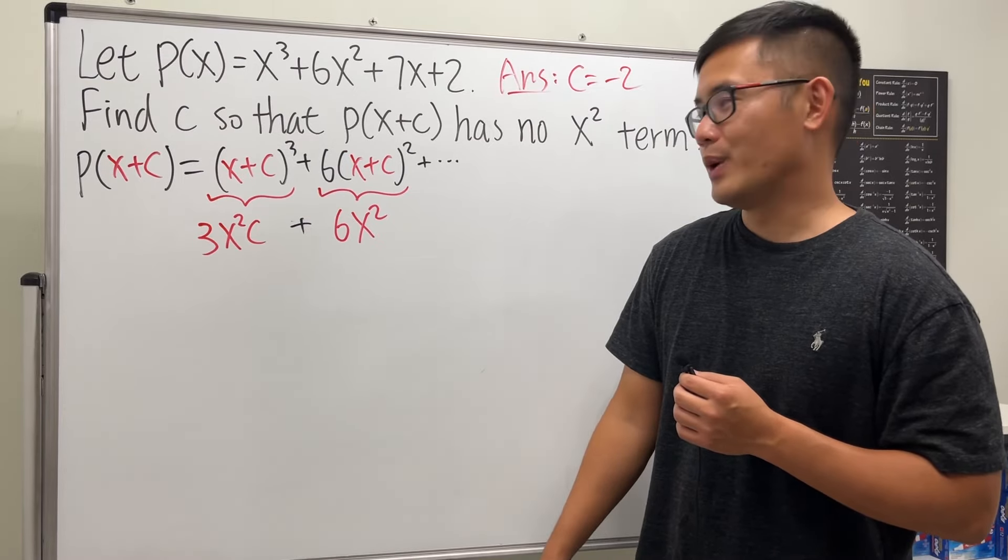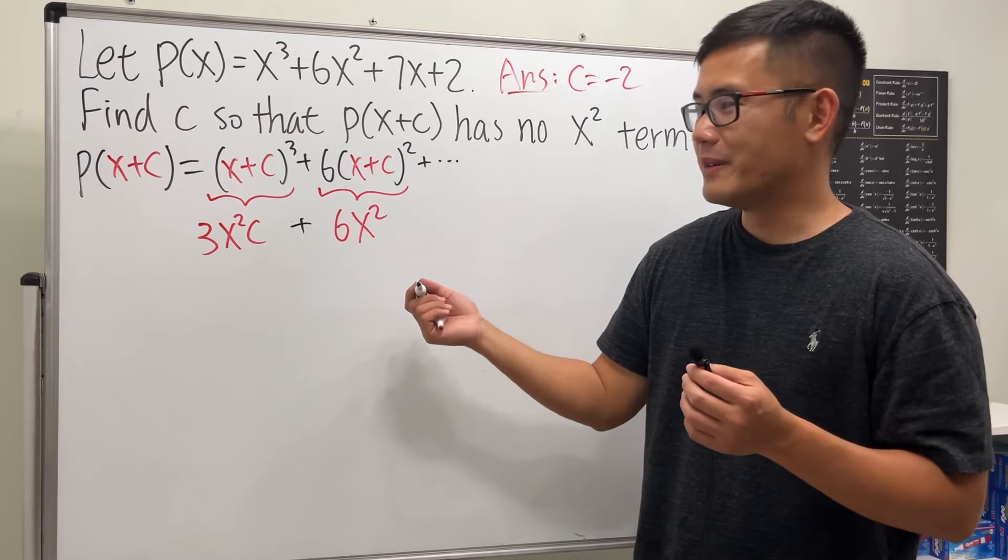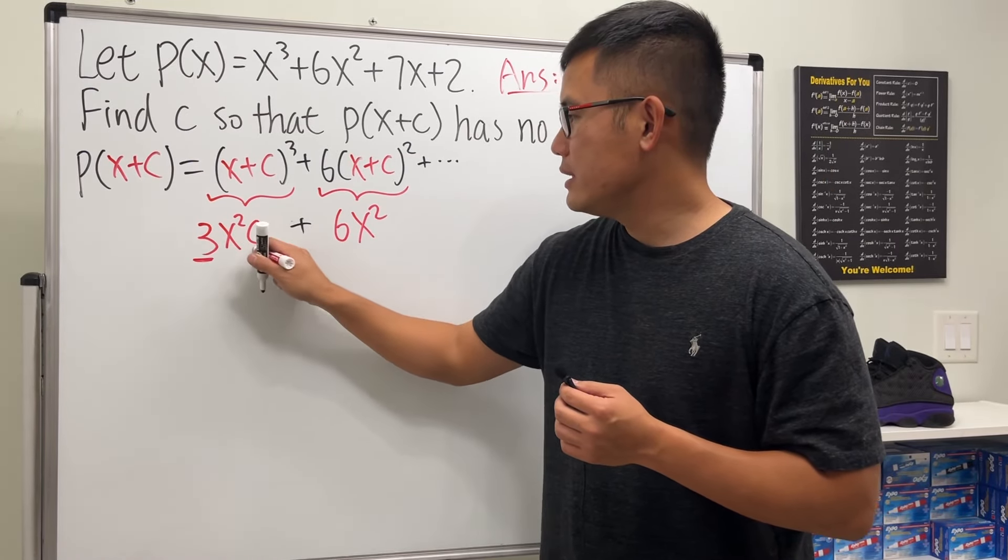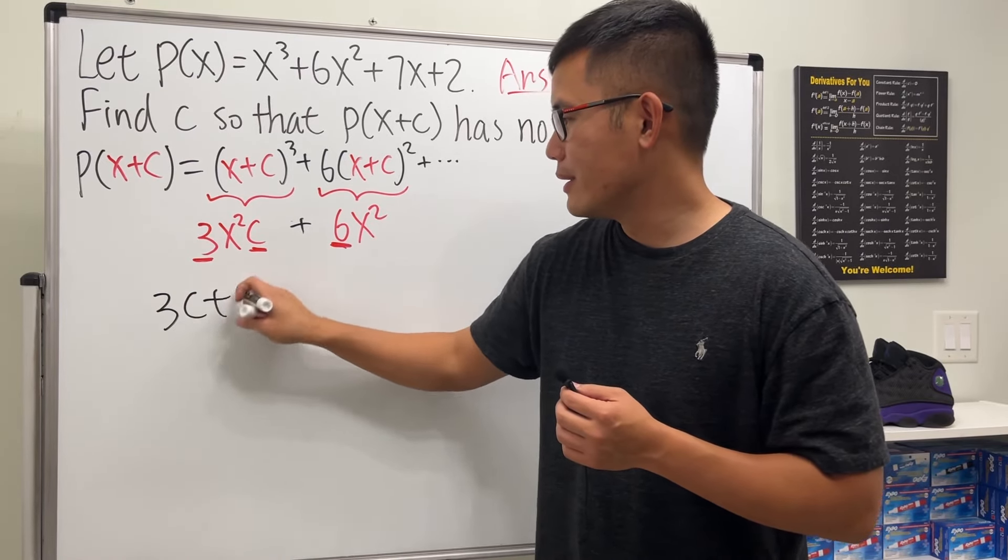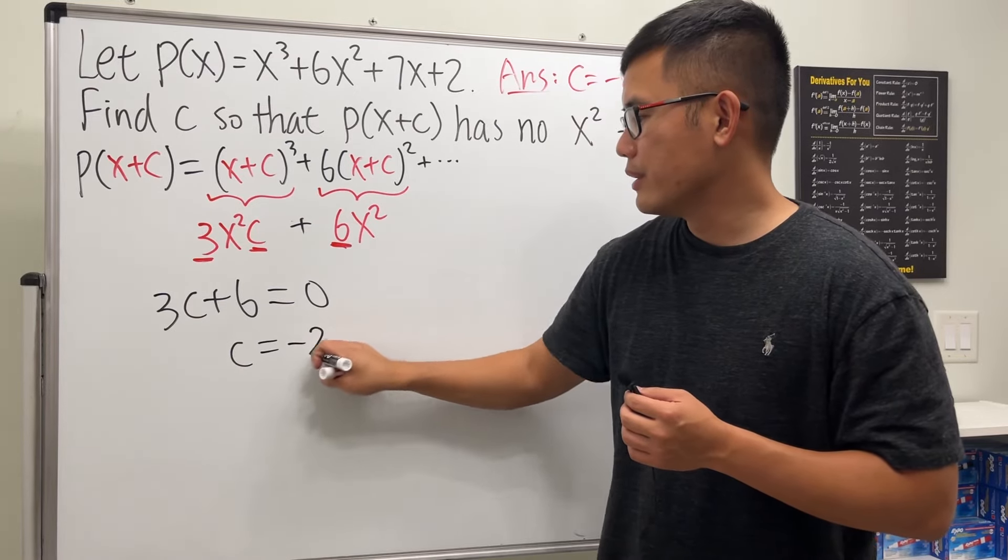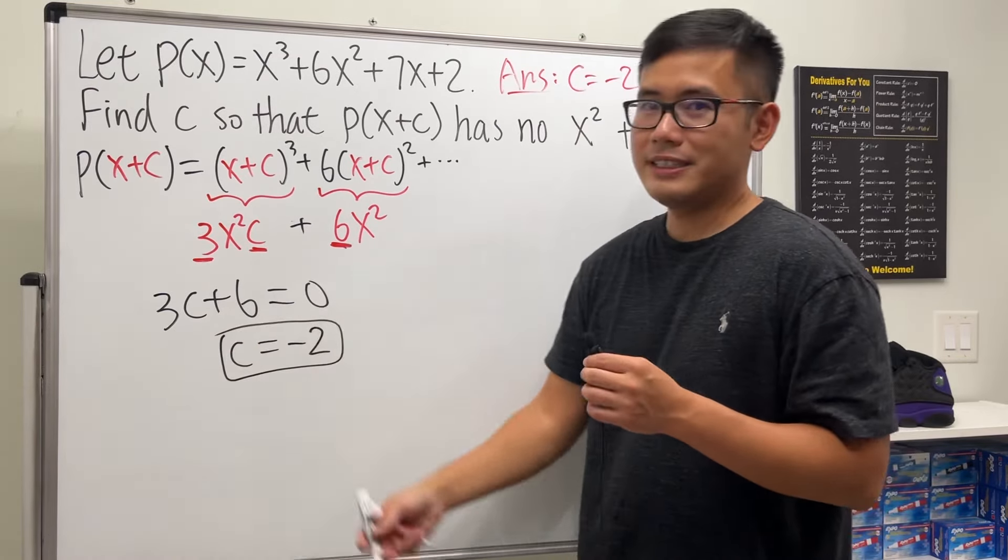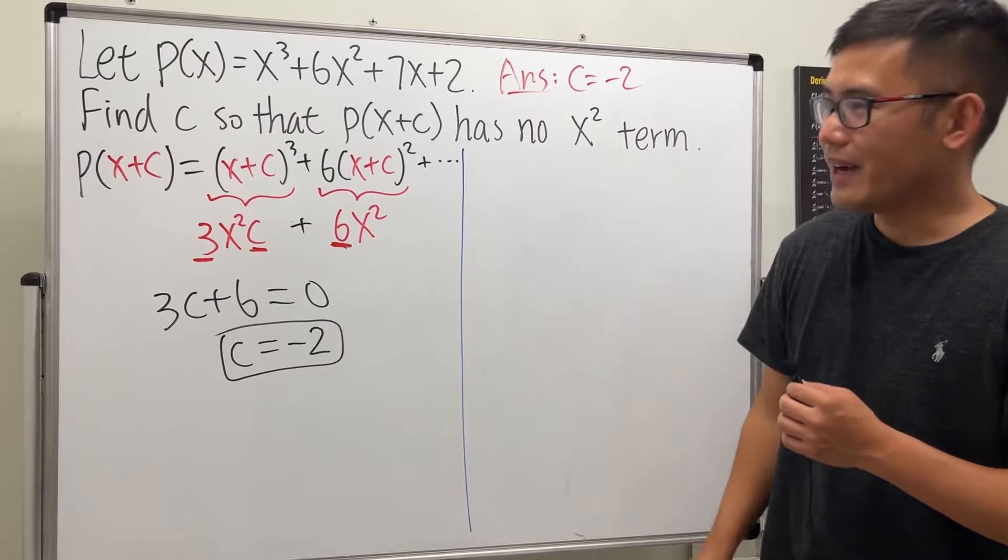If we don't want to have an x² term, that means our coefficient, namely 3c + 6, has to equal zero. So c equals -2, and we are done. That's it.